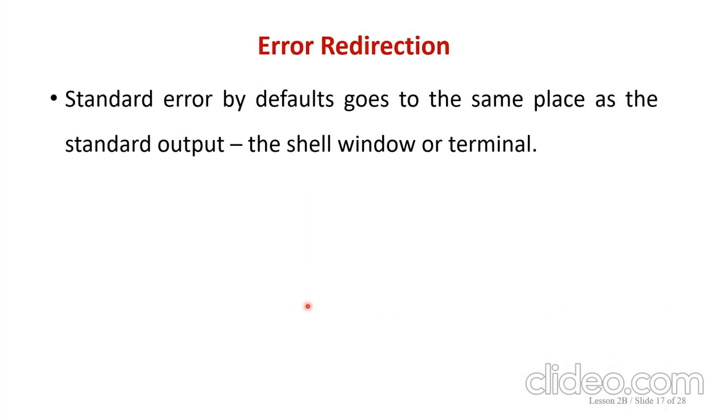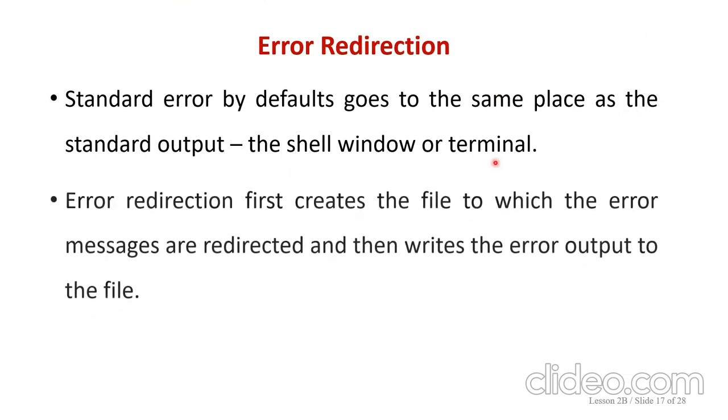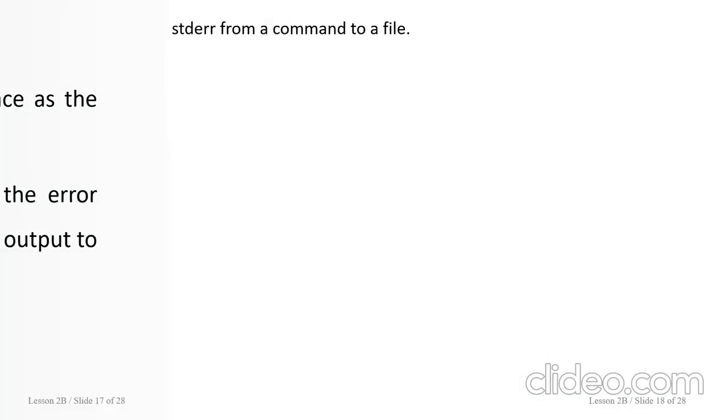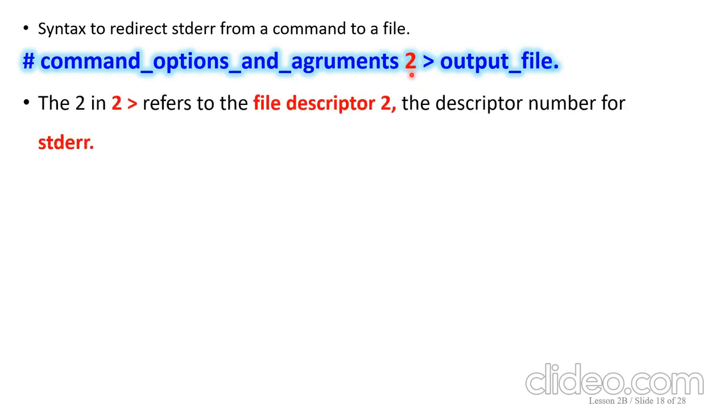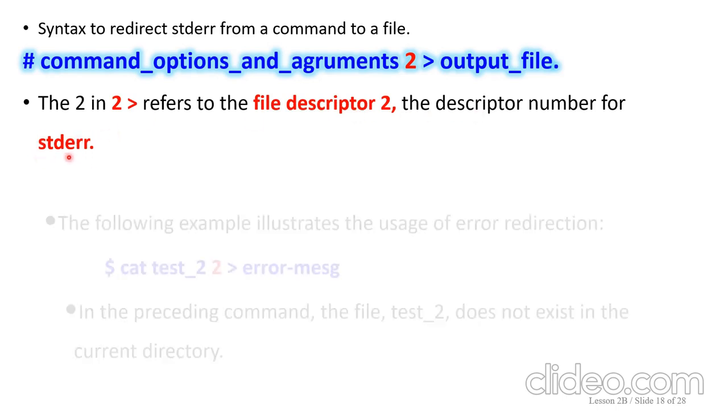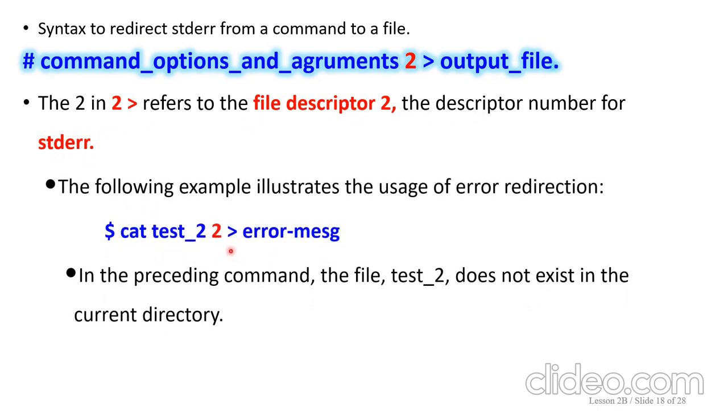The last step is error redirection. Standard error by default goes to the same place as standard output. That is to the shell window or terminal. You are going to create that particular syntax. Same way. Here the file descriptor 2 denotes that it is an error redirection. File descriptor number for standard error. So this is the example illustrating the usage of error redirection.